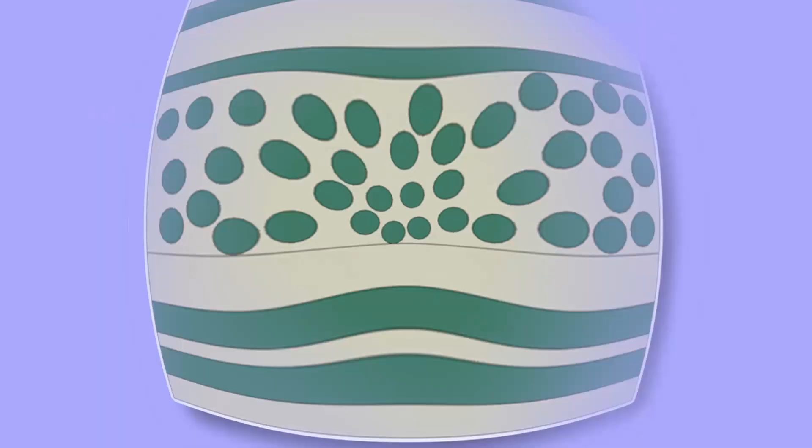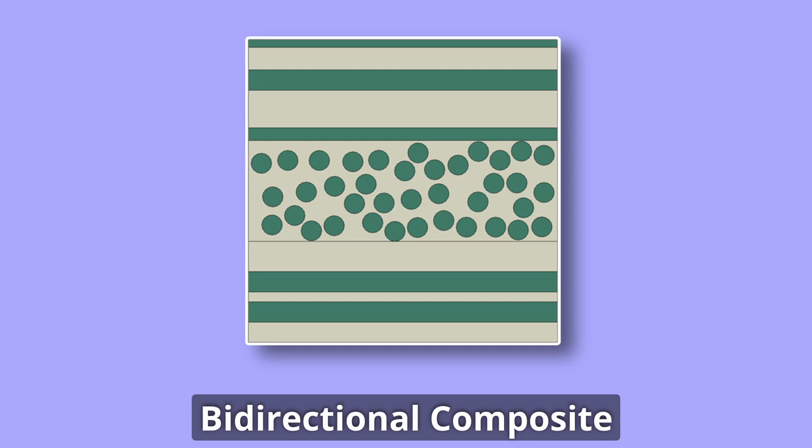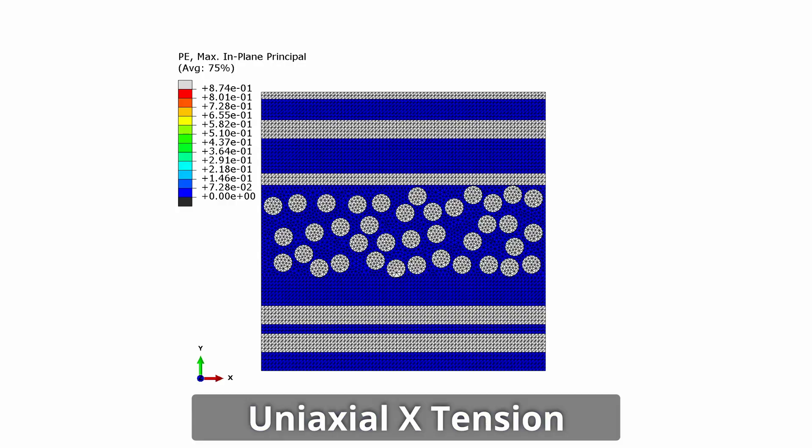Have you thought about creating bidirectional composites and running simulations with periodic boundary conditions? There is no need to wonder anymore, as this is what I will be doing in this video. I will show you how to create the representative volume element of a bidirectional composite, attach a periodic boundary condition to it, and run simulations that lead to results like these. Let's get started with this modeling.